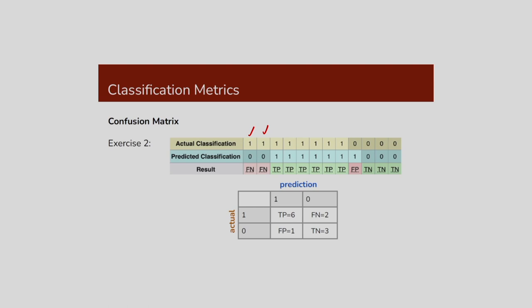In the third column, 1 is correctly recognized as 1 — actual class is 1, predicted class is 1, that is true positive. If the actual class is 0 and that is predicted as 1, that is the false positive. If the actual class is 0 and that is also predicted as 0, that is the true negative. From this: 6 times true positive, 2 times false negative, 1 time false positive, and 3 times true negative. That is the confusion matrix.